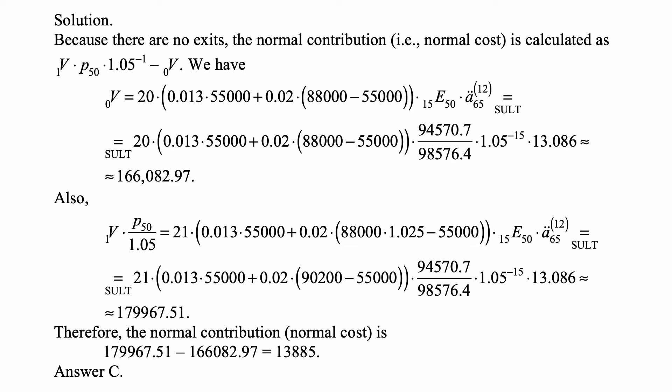We look up the values for 15E50 from the standard ultimate life table, but the pure endowment is not given for 15 years into the future. It's 5, 10, and 20. So instead I just took the probability of survival taken as the ratio of population size at age 65 divided by population size at age 50